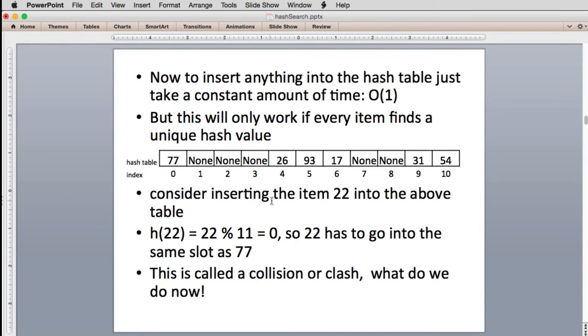Now consider, we're going to consider adding one more item to the table and we're going to see what happens here. And just to show you this, we're going to add 22 to the table that already has this data. So the steps to add it, we would take the hash of 22, which is 22 modulus 11, which is zero. So 22 has to go into the same slot as the 77. So we're actually called a collision or a clash. We're going to be calling it a collision. That's the official term. So we're going to have a little problem. So we're going to look at how we solve this. But let's look at how it works in code.